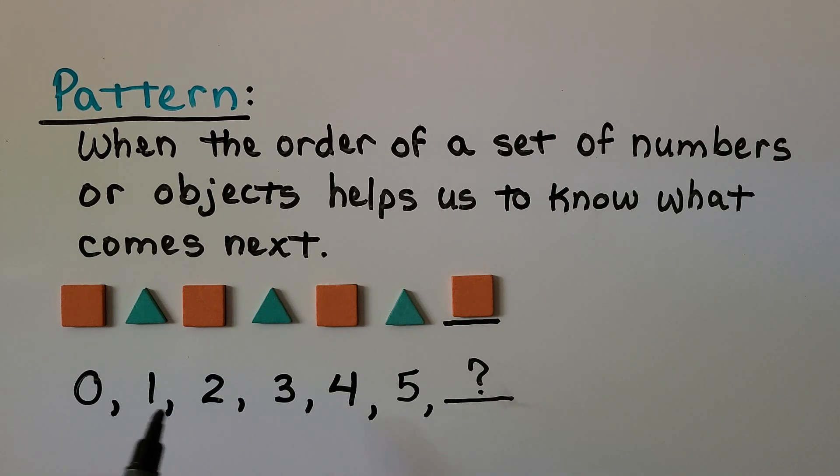And we can look at the order of these numbers to know what number should come next. Can you tell what number would come next? If you said 6, you're right. Our numbers are going 0, 1, 2, 3, 4, 5, 6. They're in counting order.